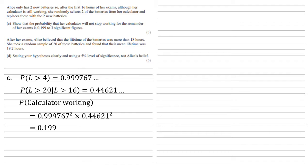After her exams, Alice believed that the lifetime of the batteries was more than 18 hours. She took a random sample of 20 of these batteries and found that their mean lifetime was 19.2 hours. Stating your hypotheses clearly and using a 5% level of significance, test Alice's belief.